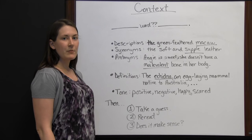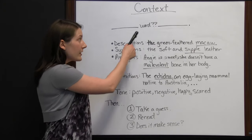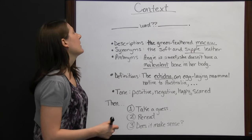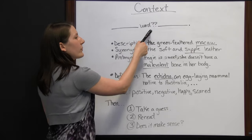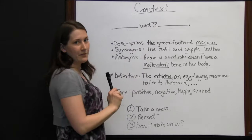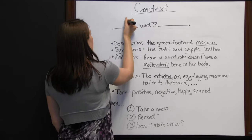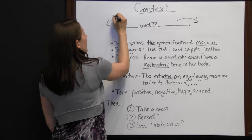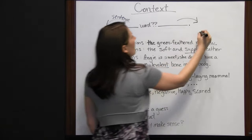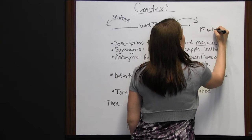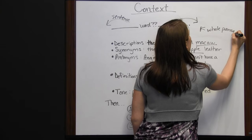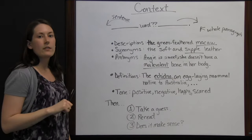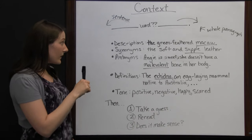Context. Sometimes when you're reading and you come across a word you don't know, you can use context clues to make an educated guess as to what the word means. When looking at the word you don't know, you don't want to just look right before and after the word — you usually want to look at the sentence before and the sentence after. Sometimes you even have to look at the whole paragraph to get an idea of what that unfamiliar word means.